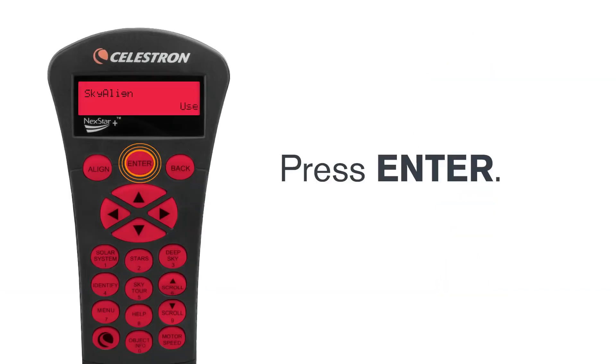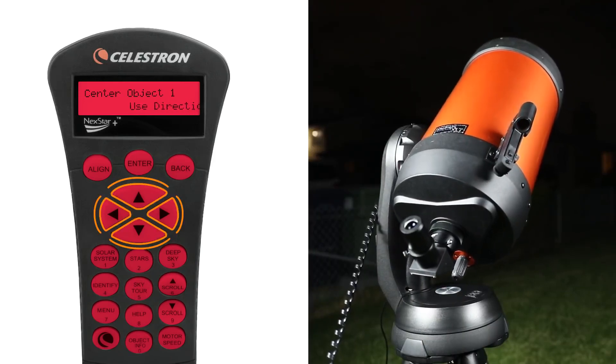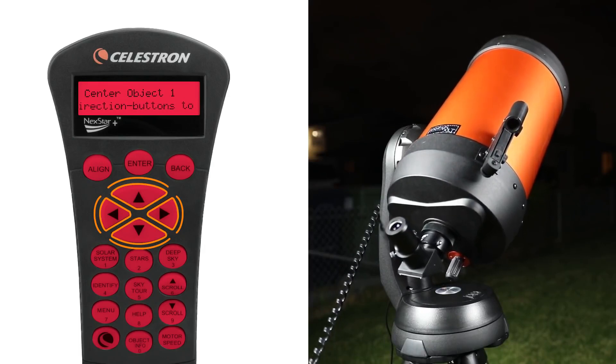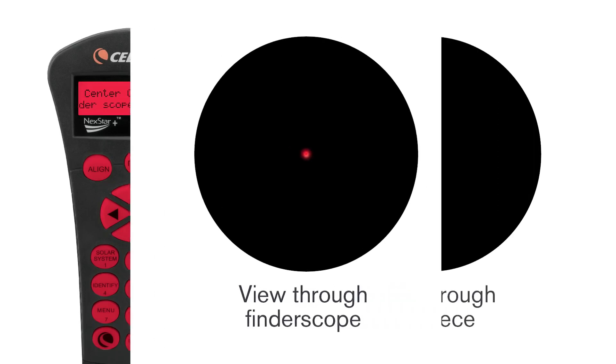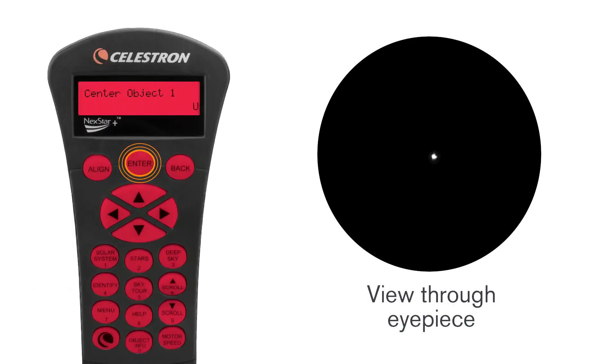Press enter to begin alignment. Use the hand control's directional buttons to move the telescope toward the first bright star. When you get close to your alignment star, look through the finder scope and use the directional buttons to move the telescope so that the finder scope's reticle or red dot is directly on top of the star. If your finder scope was properly aligned, you should see the star in your 20mm eyepiece. If it's there, press enter.